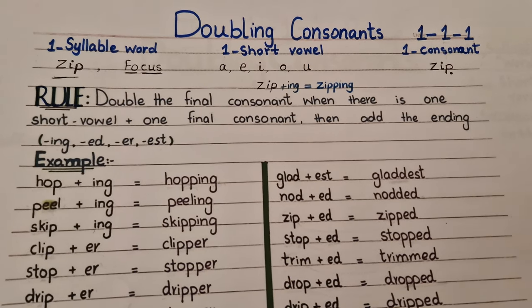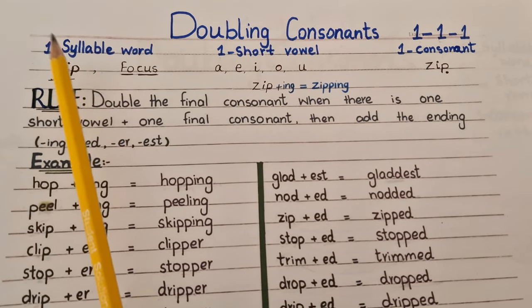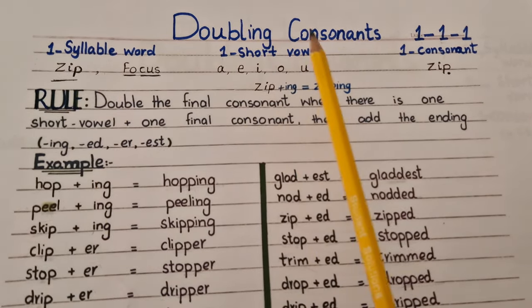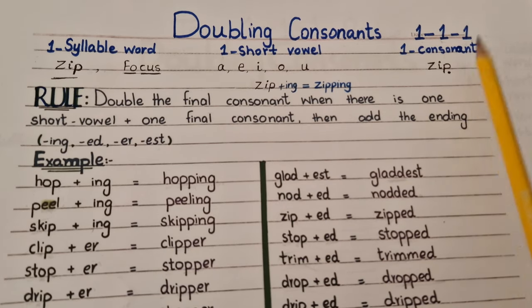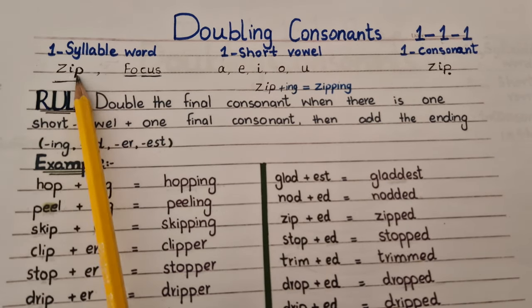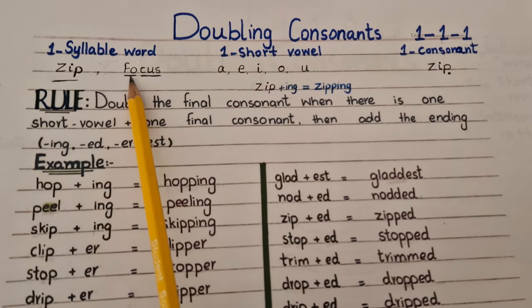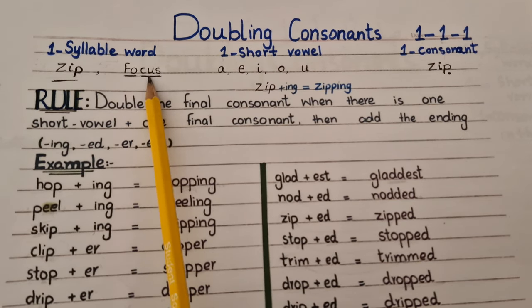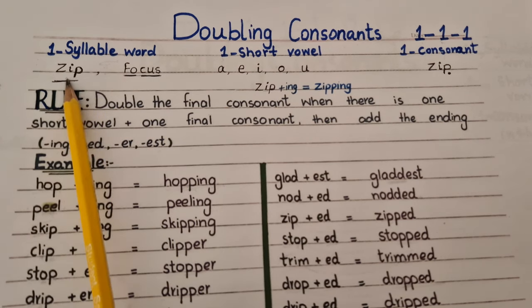We will solve this problem by using the 1-1-1 rule. It means if a word has one syllable, one short vowel, and one consonant at the end of the word, then we will double the final consonant. One syllable means one sound word — just like 'zip'. 'Focus' is not a one-sound word; this is a two-sound word: fo-cus. So syllable means one sound.